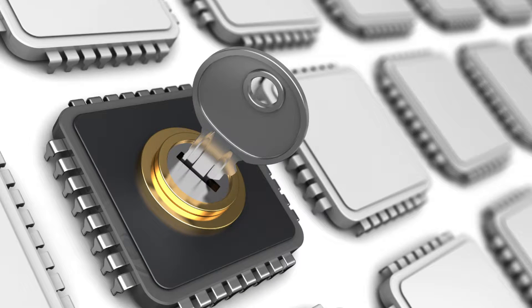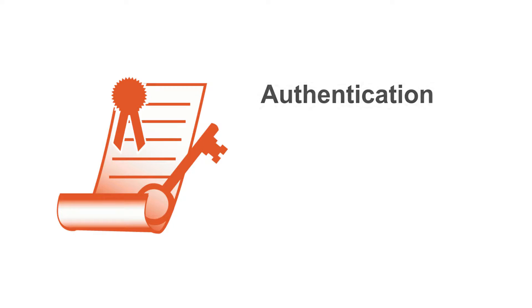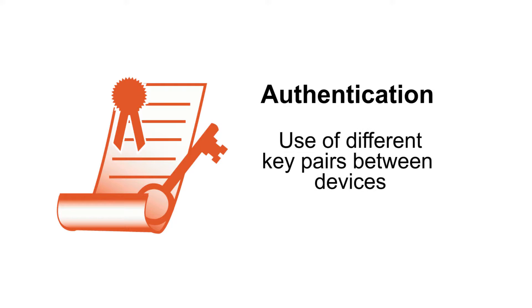Also essential to achieving end-to-end trust is protecting data on the device or during transmission. Implementing encryption enables maintaining the confidentiality of data. Authentication of each device is necessary to ensure that communication occurs only between devices with the proper credentials, typically achieved via exchanging device keys and certificates. Care must be taken to not use the same key to authenticate all devices — different key pairs should be used between devices in order to contain the impact of a potential breach.